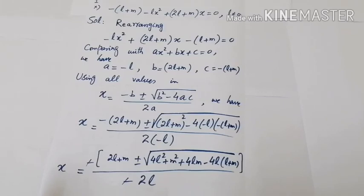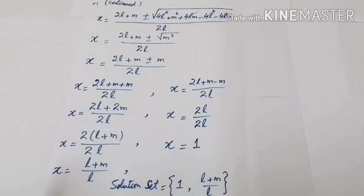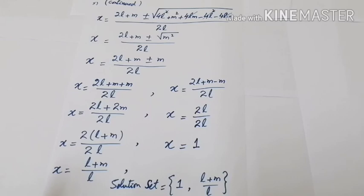So inside the root we have: 4l² + m² + 4lm − 4l² − 4lm. The terms 4l² and 4lm cancel, leaving only m². Therefore x = [(2l+m) ± √(m²)] / (2l). The square root of m² is simply m, giving x = [(2l+m) ± m] / (2l).